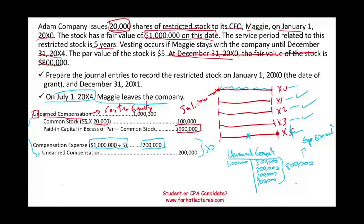What would happen if Maggie left? We'll have to cancel everything that happened thus far — act as if this transaction never took place. We need to remove common stock, remove paid-in capital, and remove unearned compensation as if it never took place. All we need is another $200,000 credit and unearned compensation is gone. And remember, we have a compensation expense of $800,000 that we have to reverse, because we recorded the expense and now we have to reverse it.